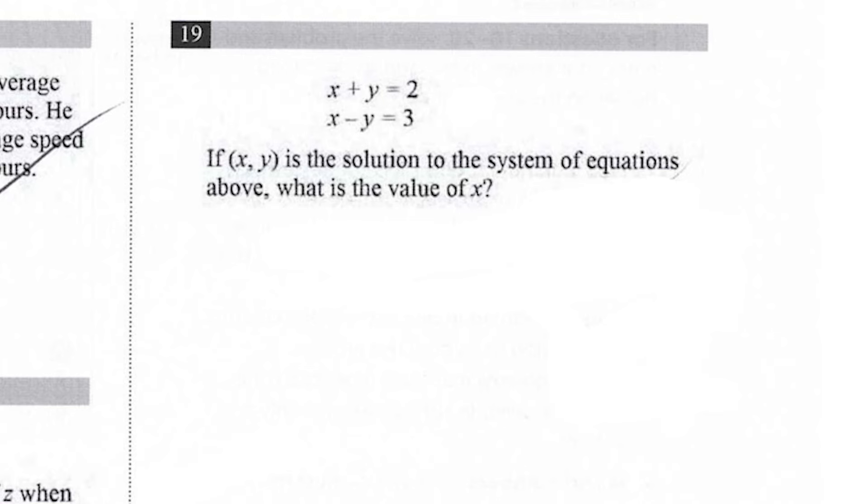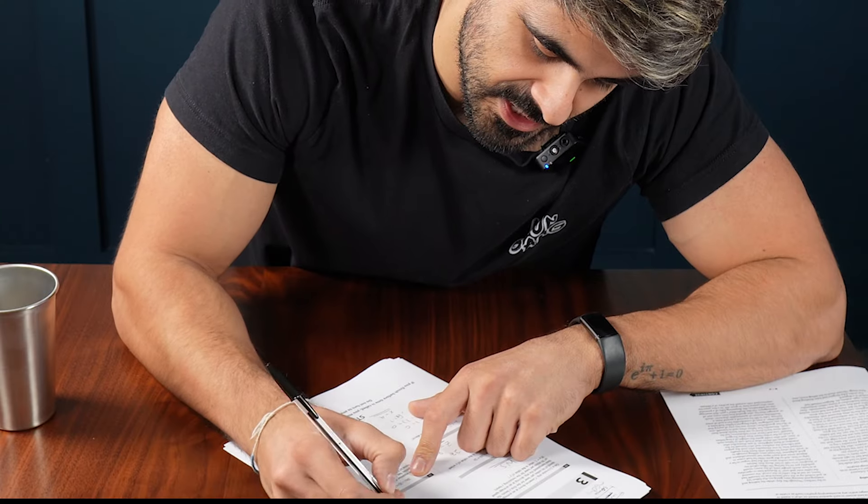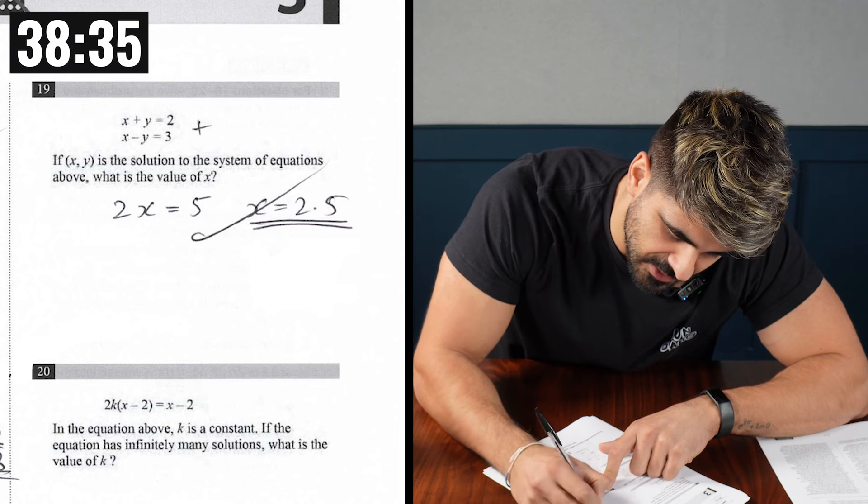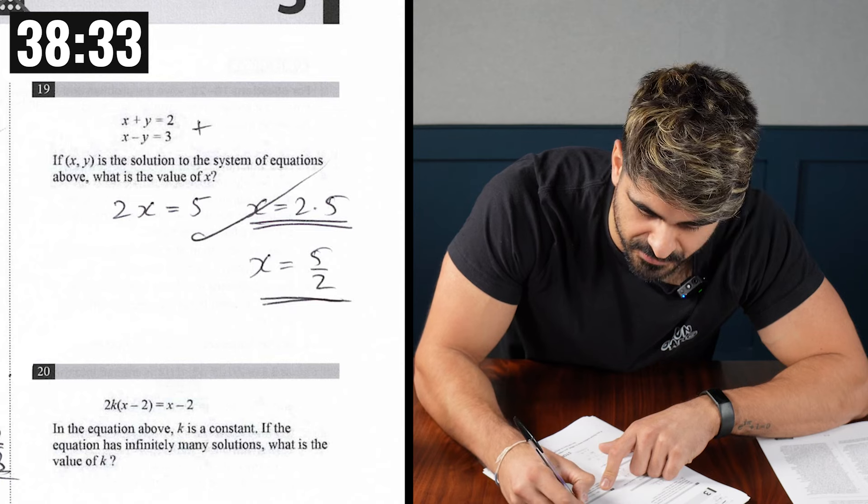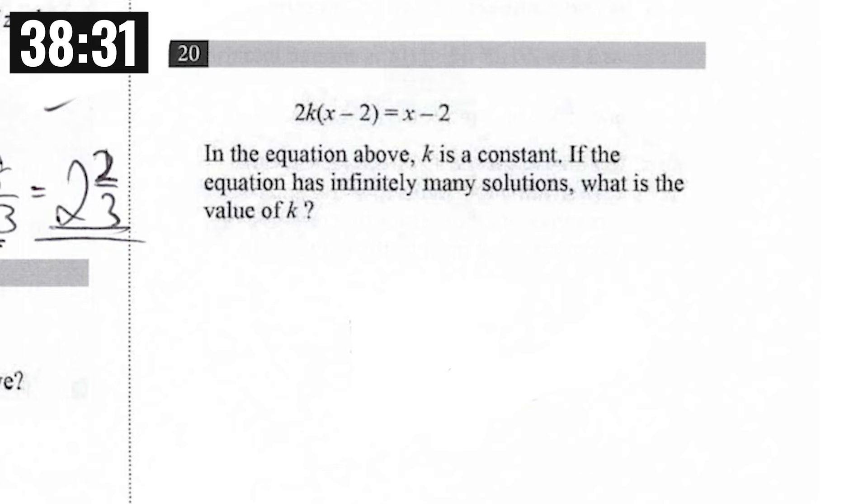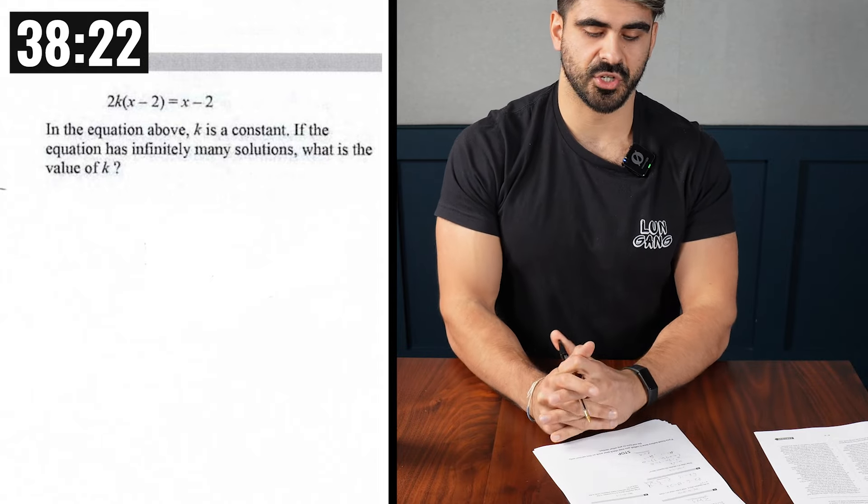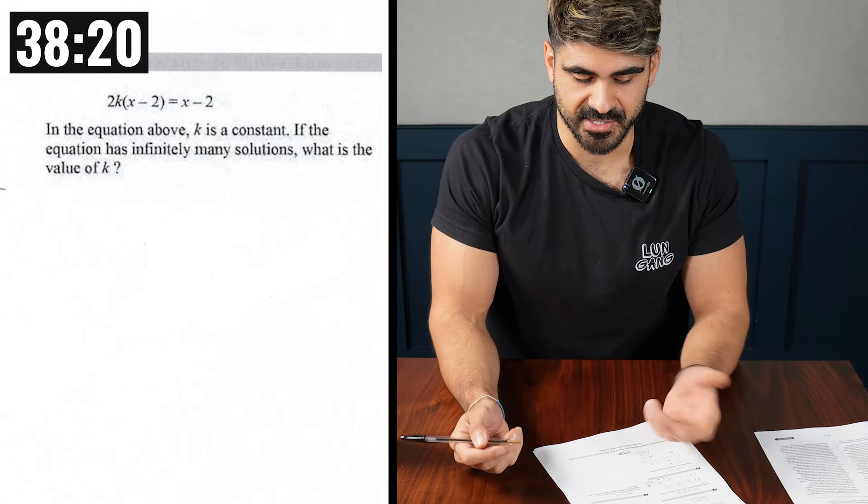What's the solution to this? Easy, mate. So we're going to add them. So we get 2X is 5. So X is 2.5. Wait, is that all they wanted? 5 over 2 or 2.5? Let's just do both answers because I'm a good boy. So in the equation above, K is constant. If the equation has infinitely many solutions, what is the value of K? Infinite solutions means that both sides are just the exact same. So K is a half. Check your work. Ain't got time for that.